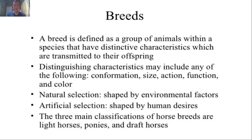Let's define breeds first. A breed is defined as a group of animals within a species that have distinctive characteristics. When we say distinctive, they are different from one another — each breed has its own identity. These distinctive characteristics are transmitted to their offspring.